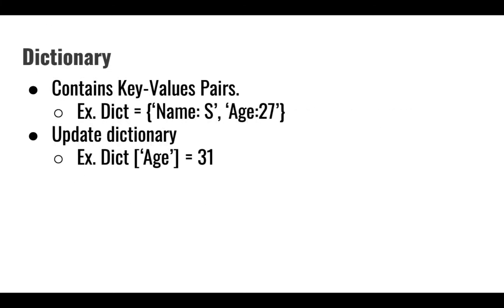Dictionary contains key value pairs. For example, we have to write the curly braces, and then in single quotes, we'll write the key and the value, then comma separated key and the value in single quotes. For example, name: S, age: 27. If I want to update any value in dictionary, I'll write the name of the dictionary, then in square braces in single quotes, I have to give the name of the key and then I can provide a value.